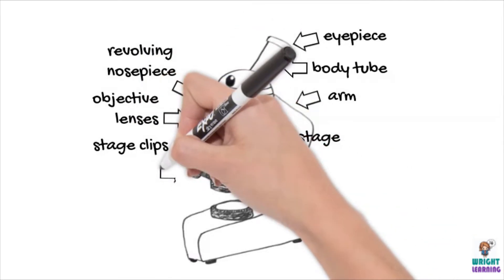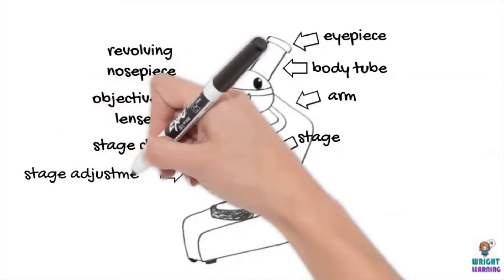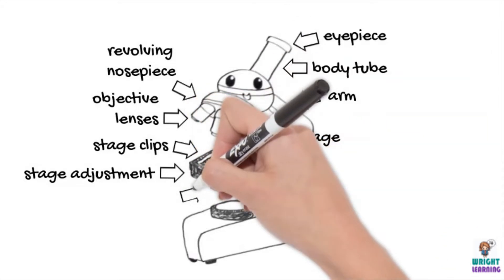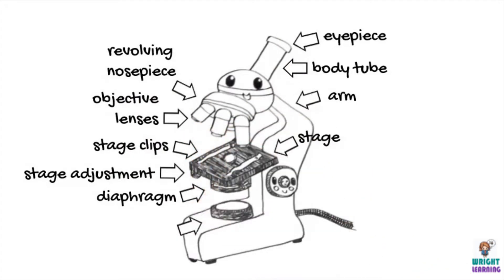Some light microscopes have stage adjustment dials to easily move the stage from side to side. We can see our sample because light passes through it. We can use the diaphragm of the microscope to adjust the amount of light we're using to view our sample, which is directly above our light source.